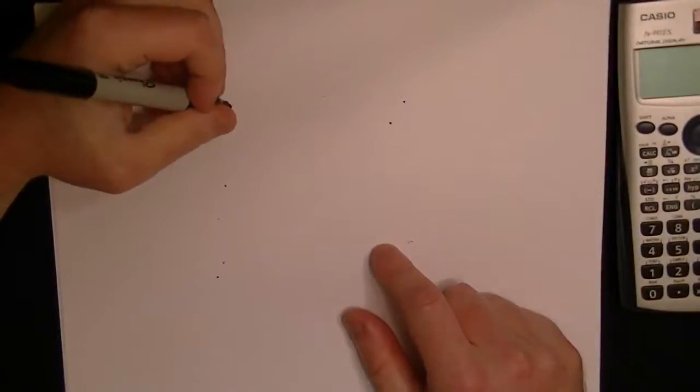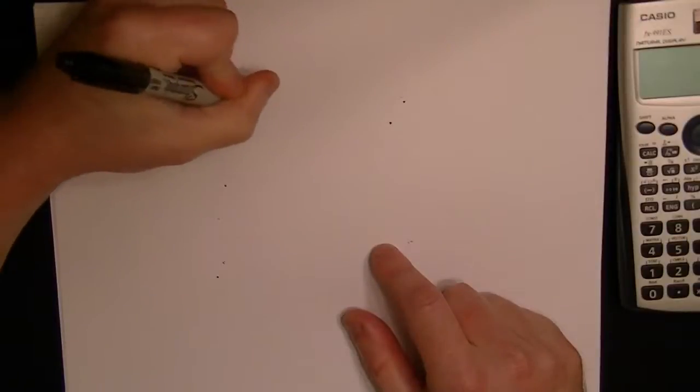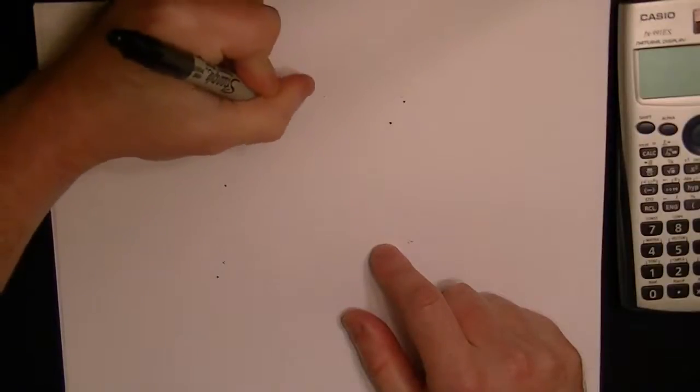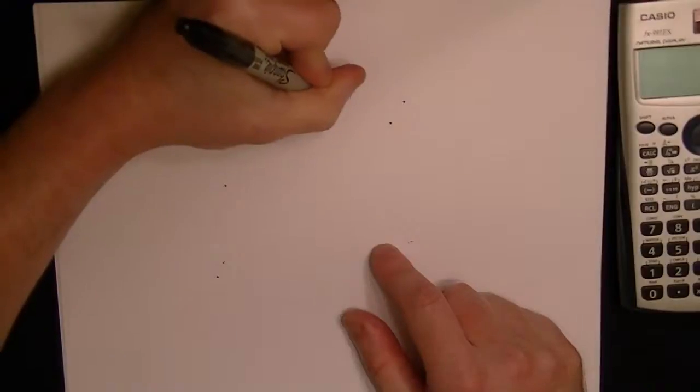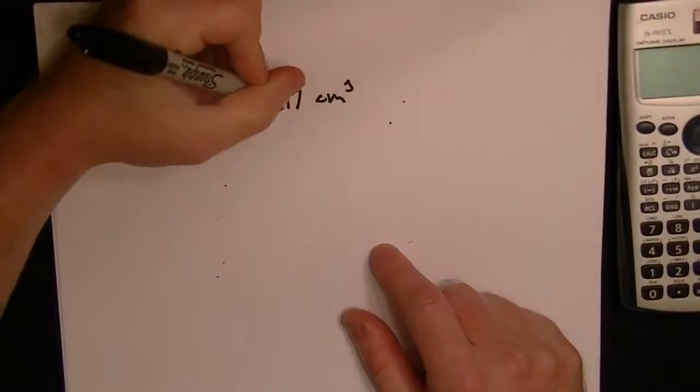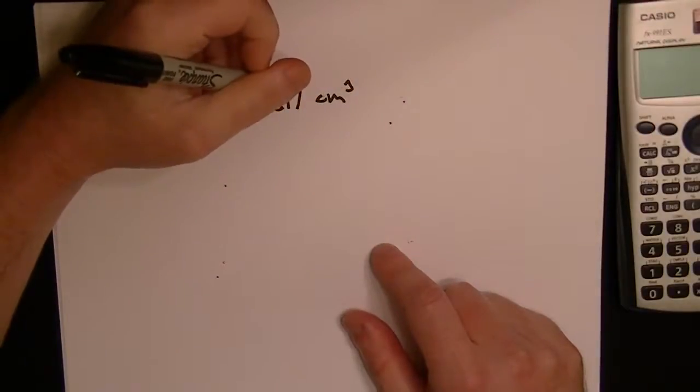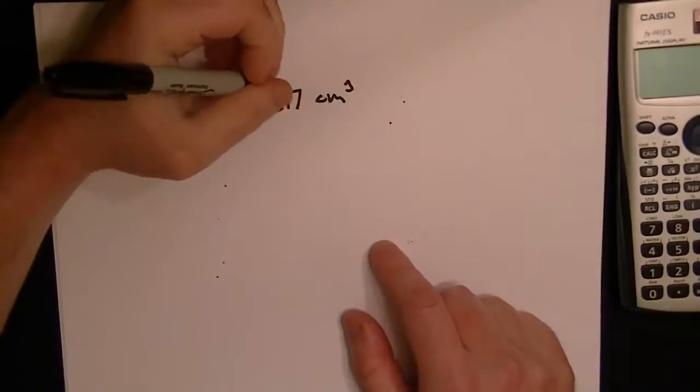Okay, we're given the volume of the sphere is 1,317 centimeters cubed. The question asks, what is the surface area of the sphere?